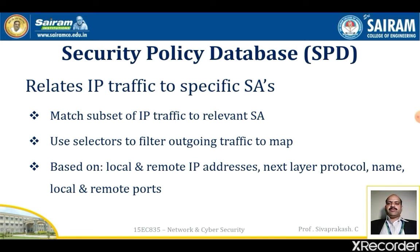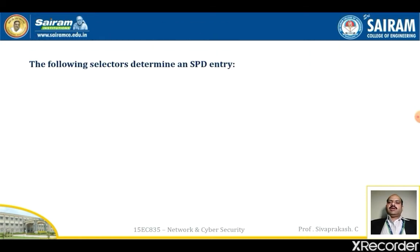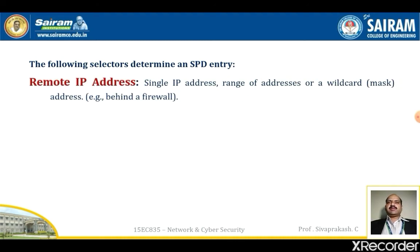The security policy database relates IP traffic to specific security associations, matching a subset of IP traffic to a relevant SA. It uses selectors to filter outgoing traffic based on local and remote IP addresses, next-layer protocol, and local and remote ports. The selectors that determine an SPD entry include: remote IP address — which may be a single IP address, an enumerated list, a range of addresses, or a wildcard masked address. The latter two are required to support multiple destination systems sharing the same SA, for example behind a firewall.